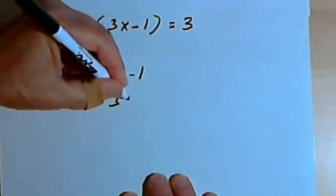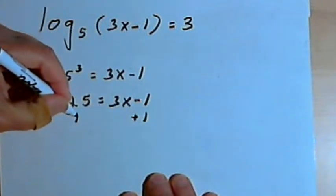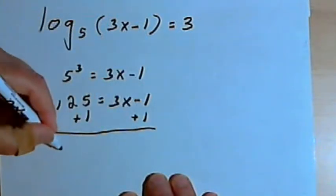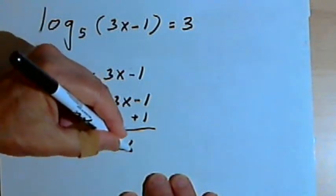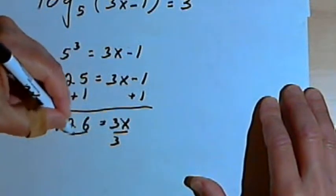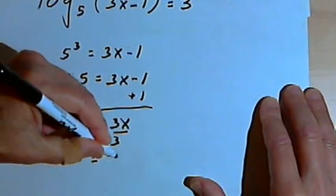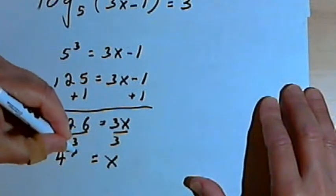That's going to equal 3x minus 1. I'll just add 1 to both sides. That gives me 126 equals 3x. And then I just divide both sides of the equation by 3. And I'm going to get x equals 42.